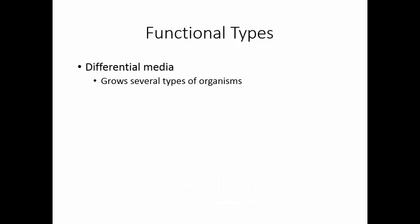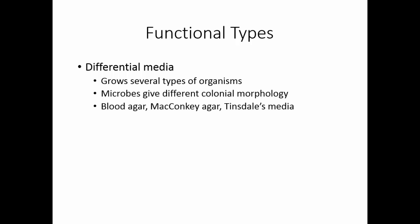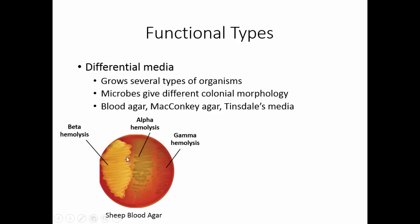Differential media will grow several types of organisms, but the microbes that grow on it will give different colonial morphology, allowing us to categorize or differentiate them. Blood agar and MacConkey's agar can also serve as differential media. Blood agar acts as differential media because the blood in it allows for different hemolytic patterns: beta hemolysis, alpha hemolysis, and gamma hemolysis or no hemolysis — allowing you to categorize organisms.